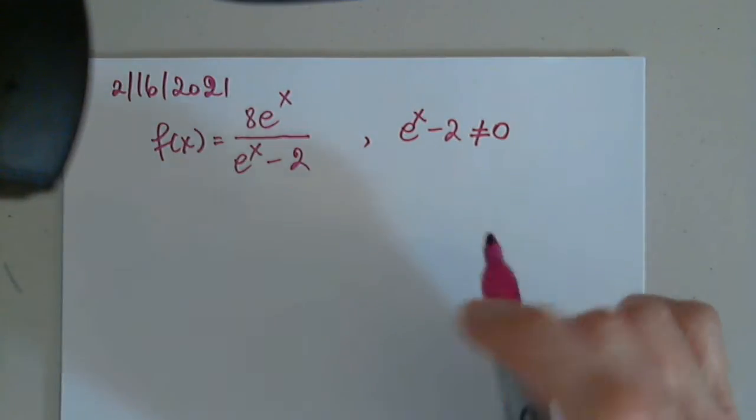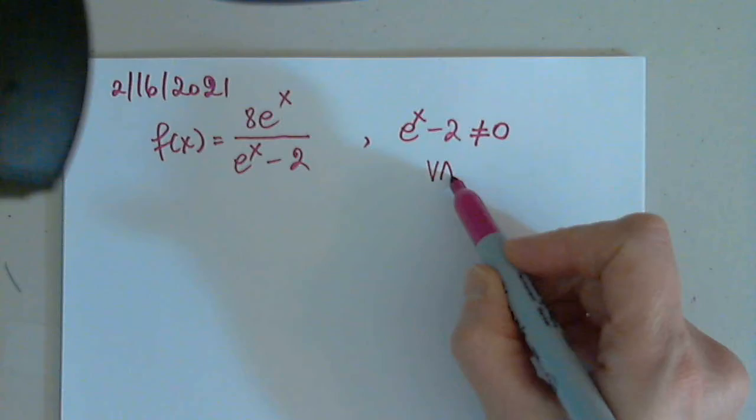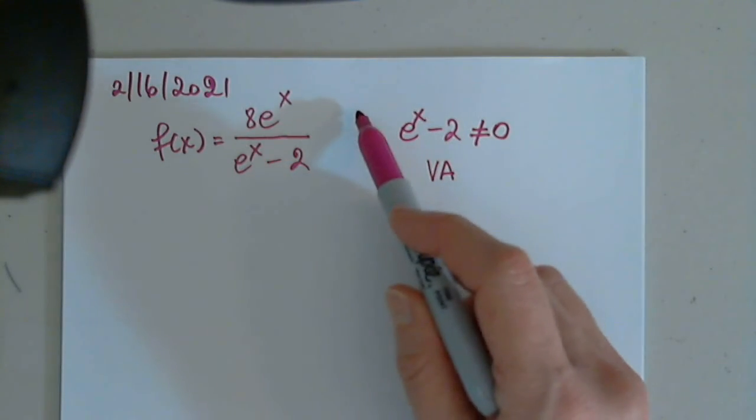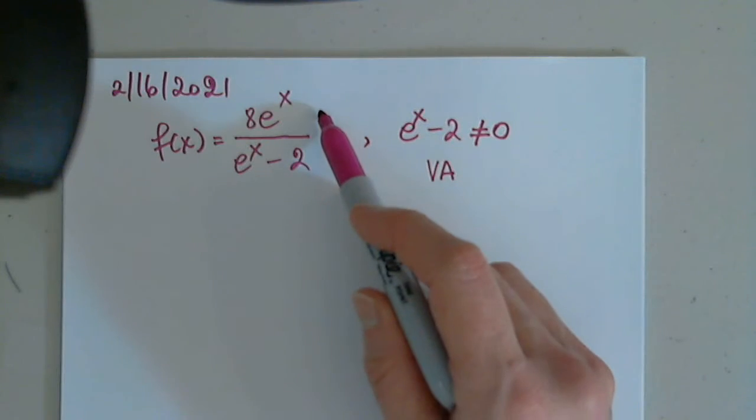...the function will have a vertical asymptote only if this factor does not go away with another factor of e to the x minus 2 from the top.